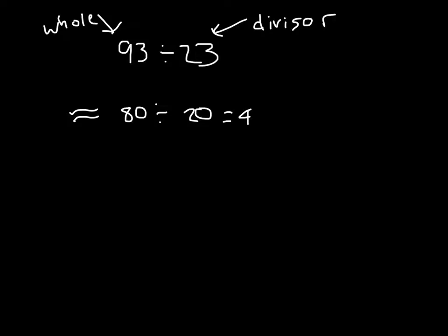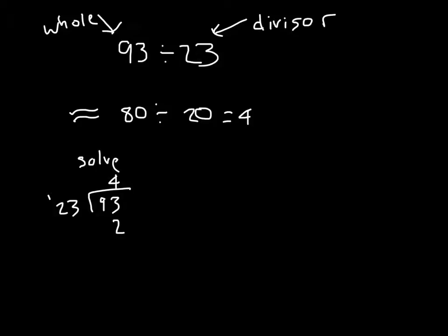Our estimated quotient can help us figure out how to divide this using the standard algorithm. We have 93 divided by 23. In this case it goes in four whole times. 23 does not go into 9, but 23 does go into 93. We multiply: 4 times 23. 4 times 3 is 12, regroup 1. 4 times 2 is 8, plus 1 is 9, so that's 92. 93 minus 92 is 1, so our remainder is 1.